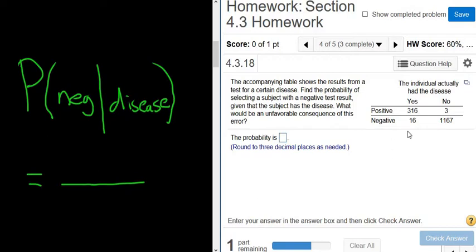So we add these up. So 316 plus 16. Well, if you add 10 to 316, that's 326. So you add 6 more. That should be 332.